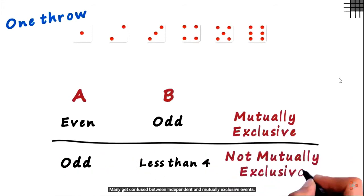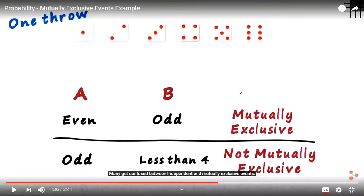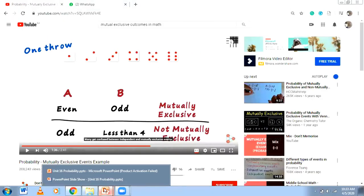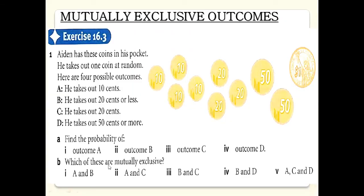Many people get confused between independent and mutually exclusive events. To clarify: if there is anything common between the outcomes, they are not mutually exclusive. For example, odd number and less than four share the number one, so they are not exclusive. But even numbers and odd numbers are completely different from each other, so they are mutually exclusive.